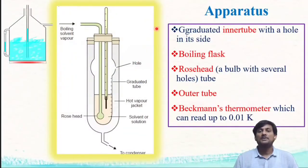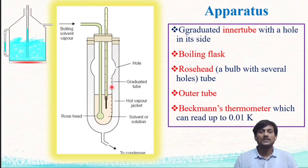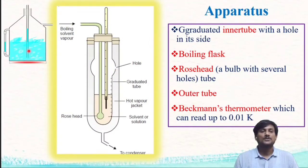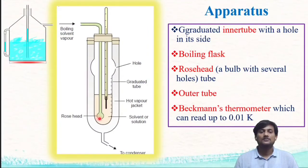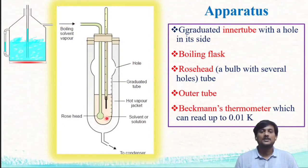The apparatus consists of a graduated inner tube. On this graduated inner tube, you can find horizontal marks and there is a side hole. This side hole connects the inner tube and the outer tube. There is a boiling flask in which we can boil solvent, and there is a connection between the boiling flask and the rose head tube. This rose head tube has a head containing several small holes, and it connects the boiling flask and the inner tube.